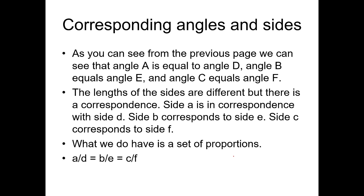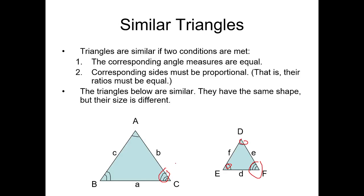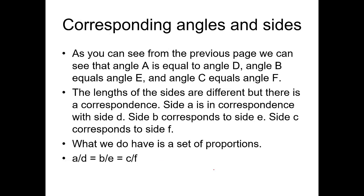Corresponding angles and sides. As you can see from the previous page, angle A is equal to angle D, angle B equals angle E, and angle C equals angle F. Therefore, we have what we call the set of proportions: A is to D is equal to B is to E is equal to C is to F. All of them are equal.